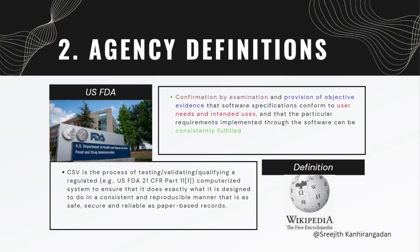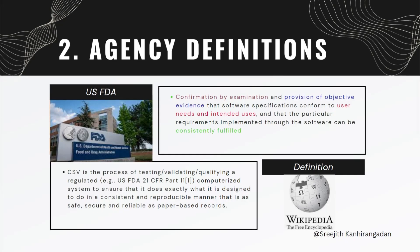Now that you understand what computer system validation is, let's look at agency definitions. The US FDA says: confirmation by examination and provision of objective evidence that software specifications conform to user needs and intended uses, and that the particular requirements implemented through the software can be consistently fulfilled. Wikipedia defines CSV as the process of testing, validating, or qualifying a regulated — for example, FDA 21 CFR Part 11 — computerized system to ensure it does exactly what it is designed to do in a consistent and reproducible manner that is as safe, secure, and reliable as paper-based records. You can see there is consistency across definitions.